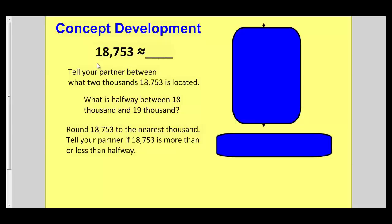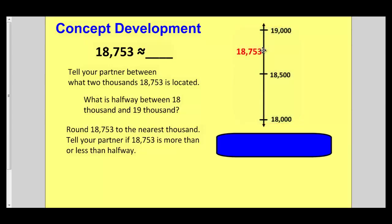Try this one: 18,753. We are rounding to the nearest thousand, so draw your vertical number line and put how many thousands are in 18,753, what would be 1,000 more, and the halfway point. Then label 18,753 on your number line. When ready to check, press play. You can see that 18,753 is more than halfway, so it rounds to 19,000.